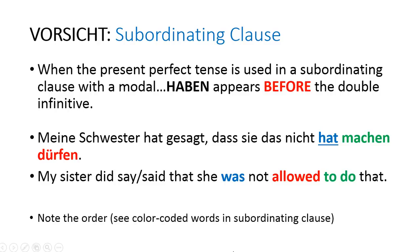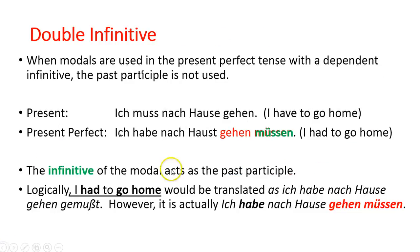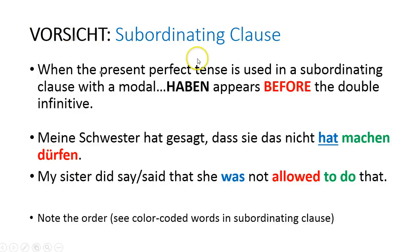When we have a subordinating clause, we have one other thing to worry about — word order. Previously, haben was in the second position in an independent sentence — simple subject-verb order. But when we have a subordinating clause, our word order changes: haben goes before the double infinitive. And haben is conjugated to go with the subject of that clause.